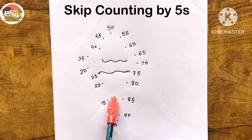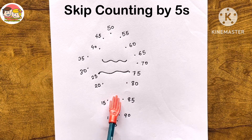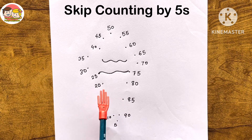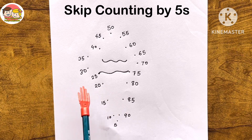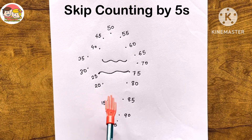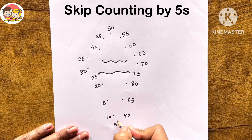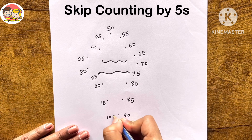The next worksheet is on skip counting by fives — same concept as skip counting by twos. Join dot to dot by skip counting by fives to complete the worksheet. After joining the dots we will get a beautiful picture, then identify the picture and color it. Start from 5, then 10, then 15.